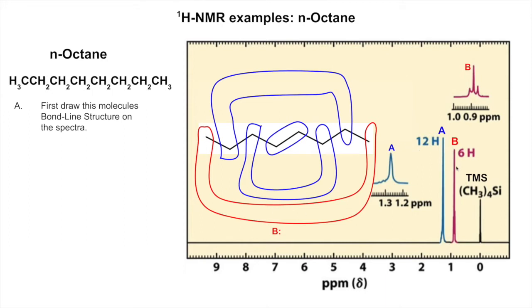Signal B is the terminal methyls - you'd guess that because it says six hydrogens. Also, those three hydrogens have two neighbors, which makes it a triplet. So signal B is a six-hydrogen triplet. Over here we also have a three-hydrogen triplet, and they're equivalent so they overlap perfectly to make a six-hydrogen triplet.